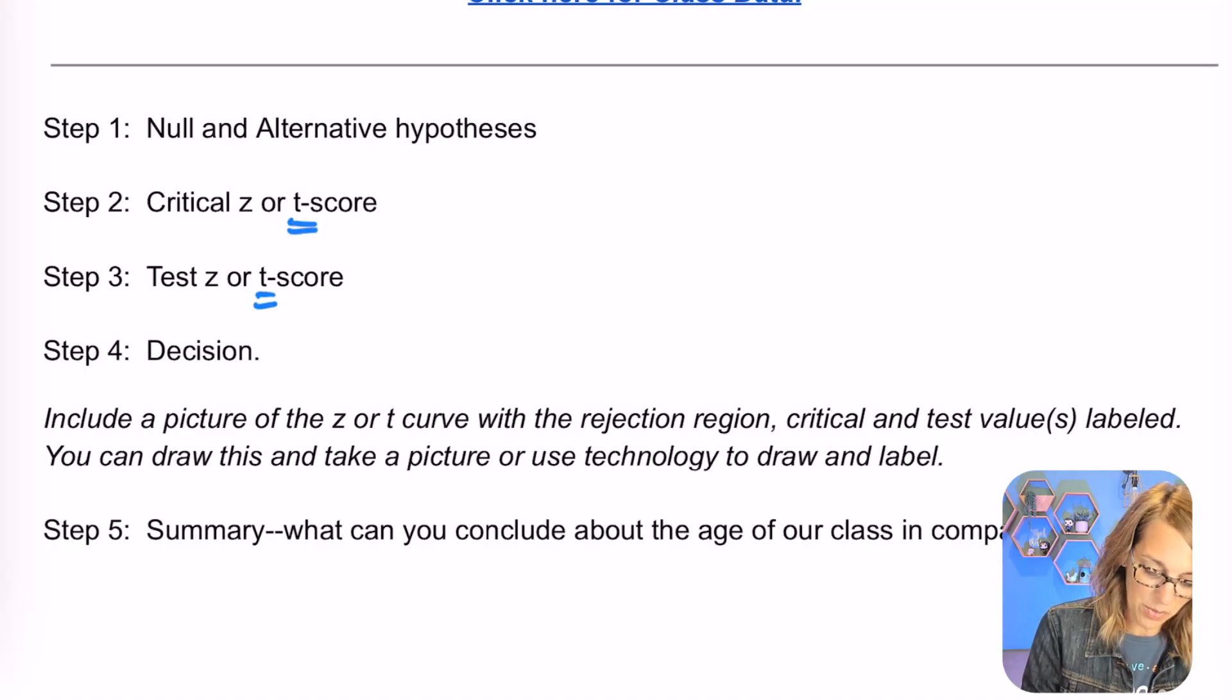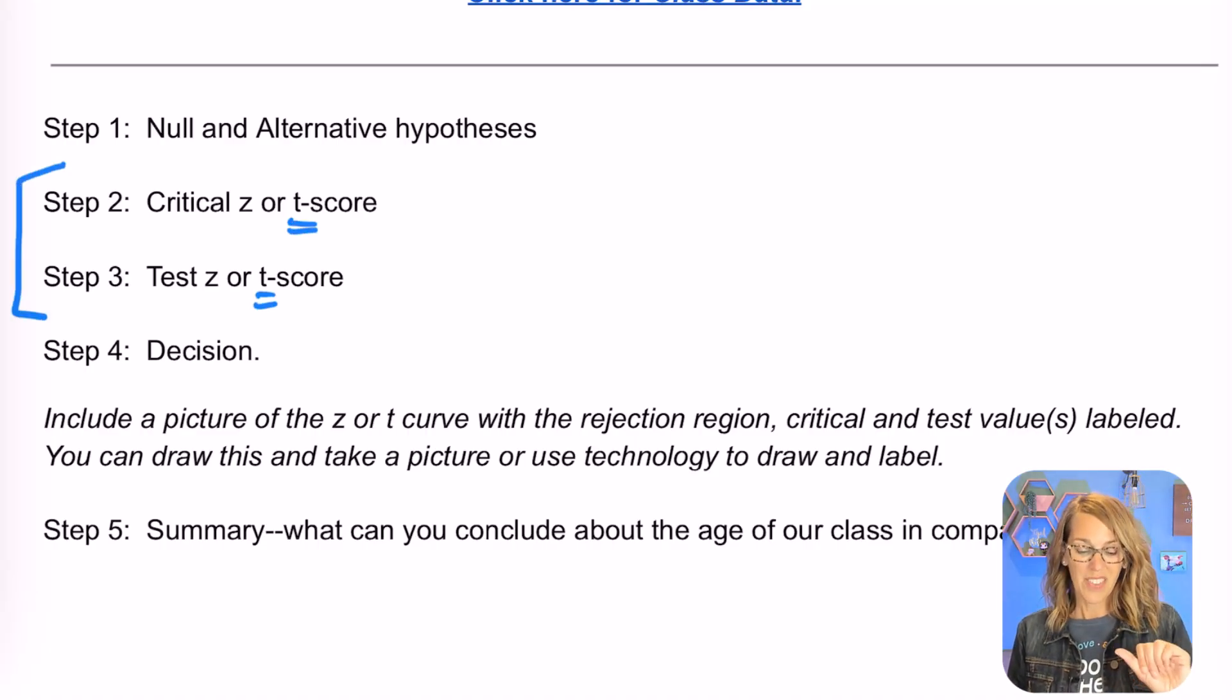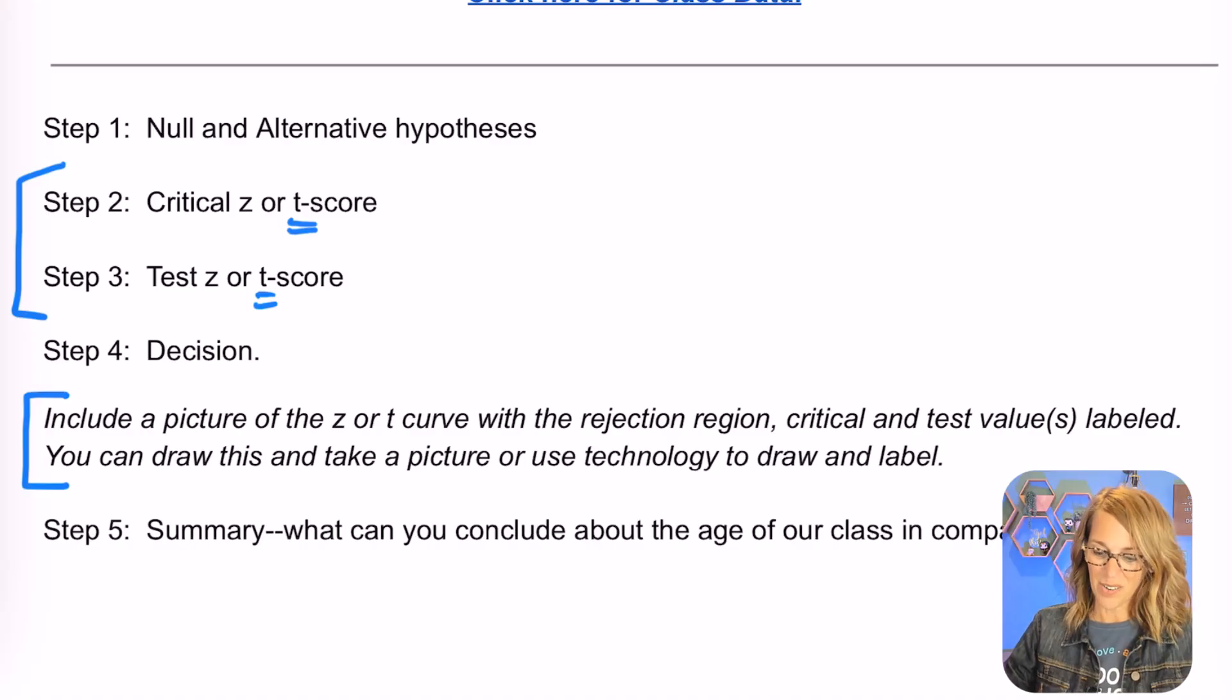Desmos will help with the critical and the test score. Then of course we need to make that decision to either reject or fail to reject, but we need to include a picture of that curve with the rejection regions labeled. Desmos will help us with that as well. Let's start with the hypotheses though.